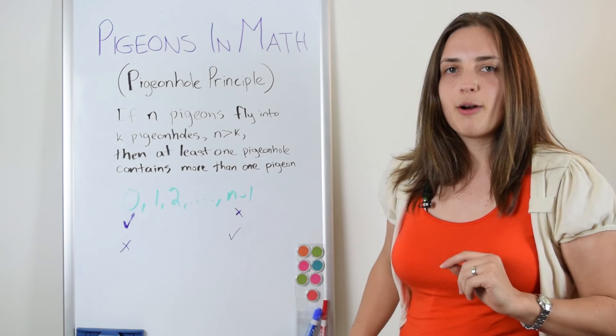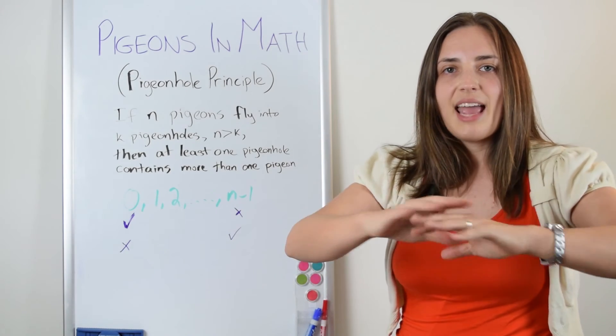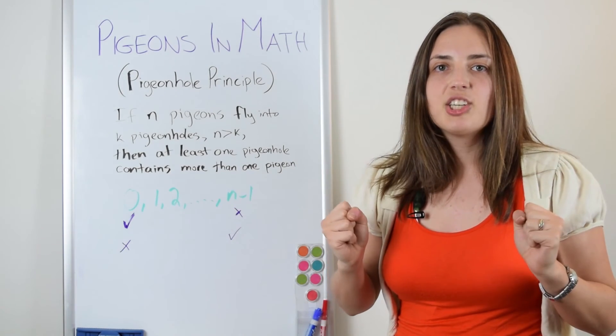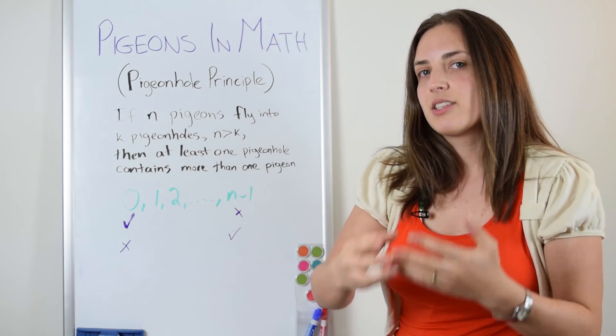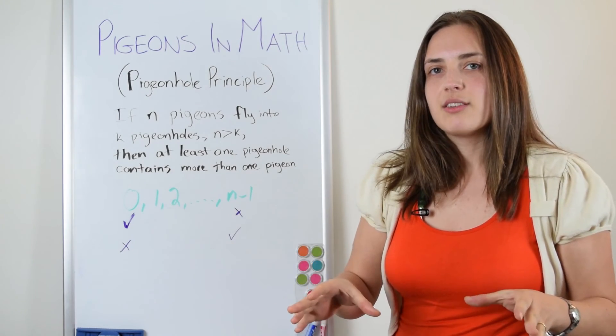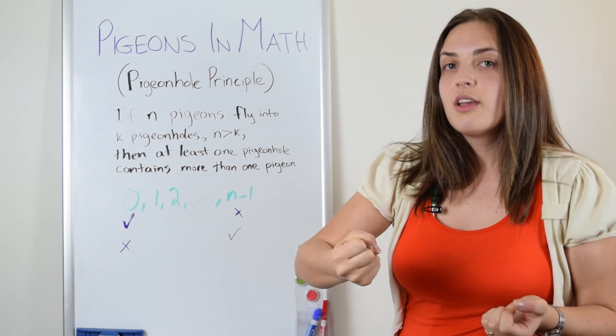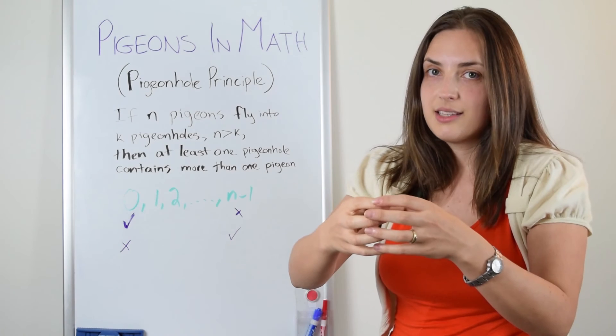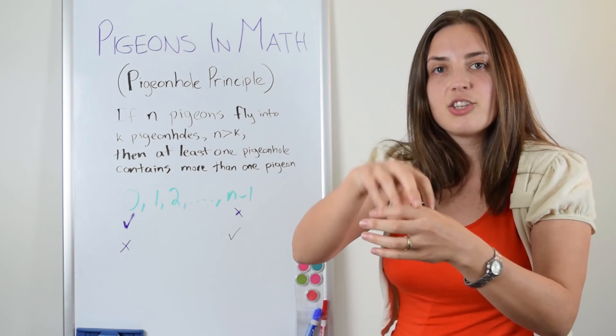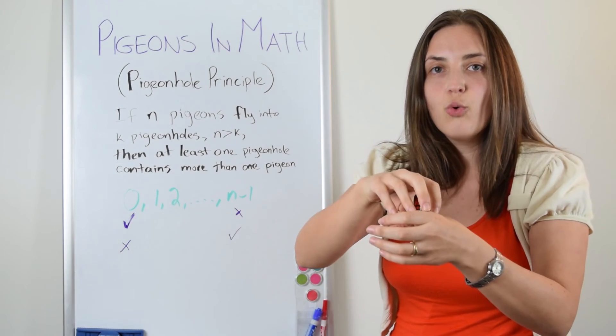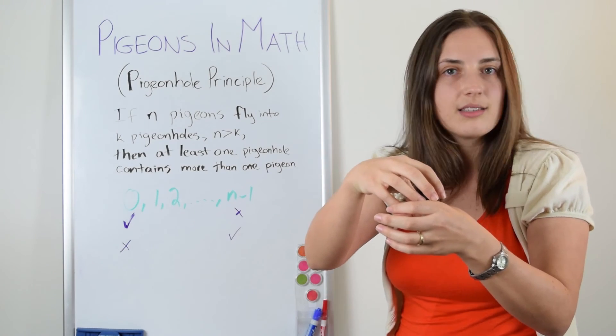So what we do is we set up our problem like this. We say we have n people, those are the pigeons, and we have n minus one options for the degrees. Those are like the pigeonholes. So when we try to fit the pigeons into the pigeonholes, there will be a pigeonhole, in this case a degree, that is shared by at least two pigeons, or people in this case.